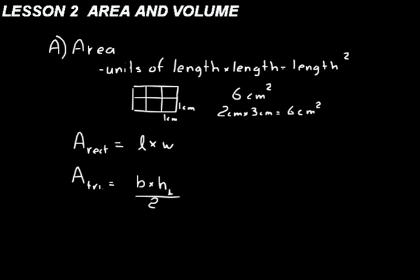Just think about this: here's a rectangle. We could split it with a diagonal and end up with two triangles. So if the area of the whole rectangle was length times width, the area of one of those triangles is just length times width divided by two. In a triangle, we usually call the bottom side the base and the height perpendicular to that H — B and H.